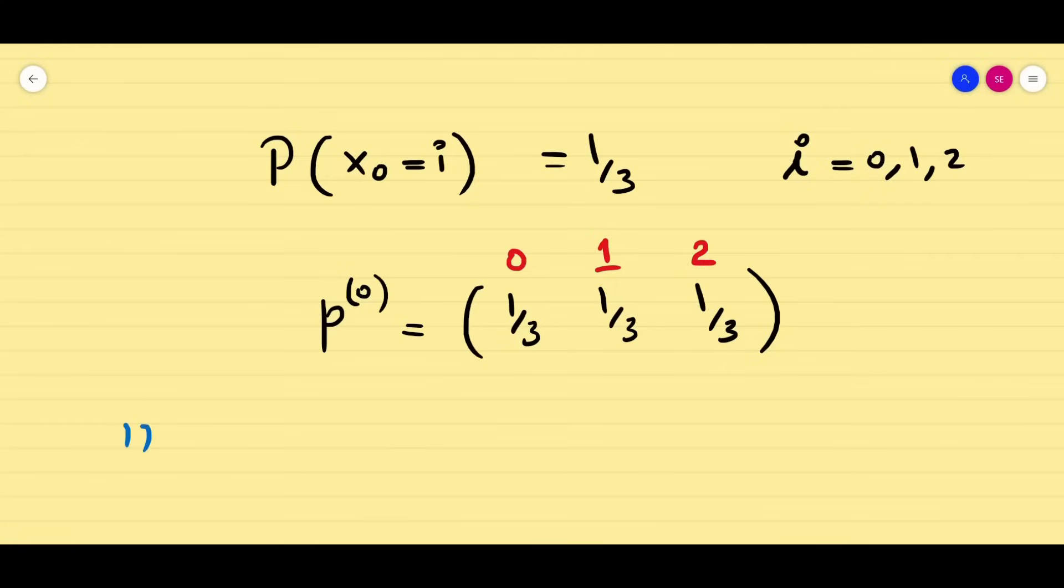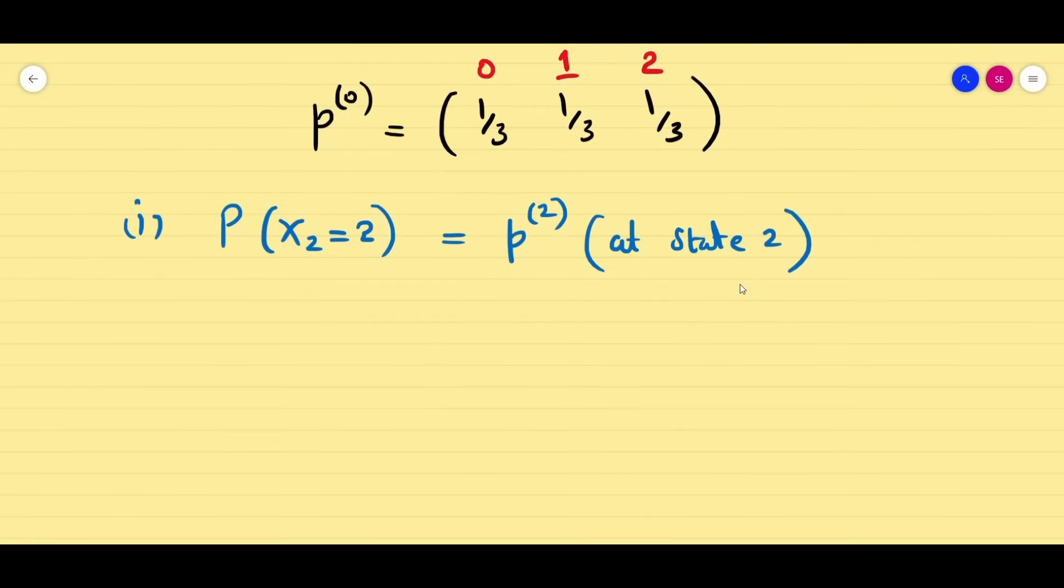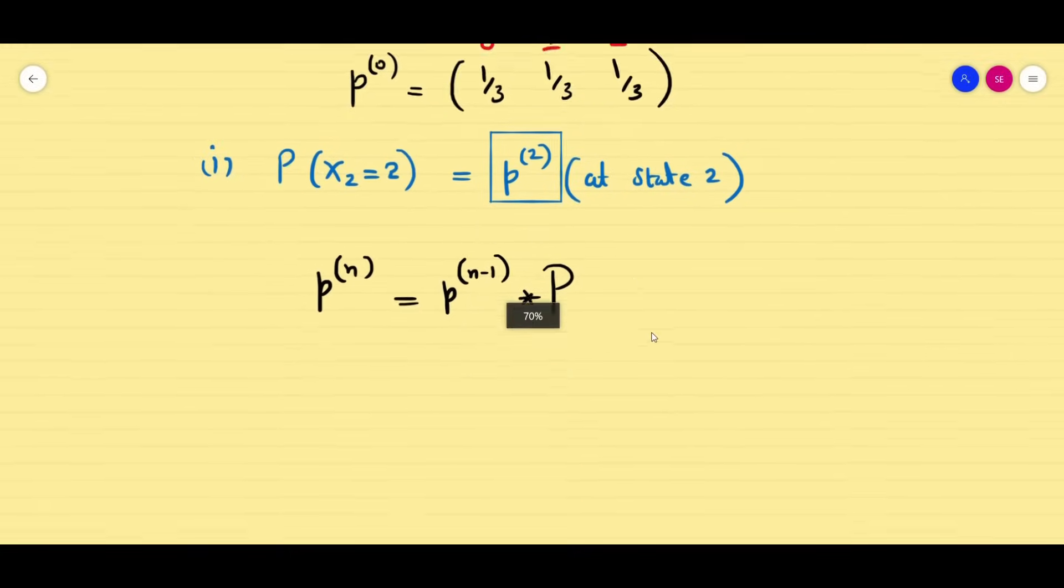Now what is the question asking us? The first question is P(X2 = 2). So P(X2 = 2) means P squared at state 2. If you don't know this, go and watch the basic video and you can get the clear idea how to find this. Now to find P2, what is needed? We remember the formula: Pn = P(n-1) times capital P. This capital P is going to be my transition probability matrix. Now as I said, just use your calculator for calculator tricks.